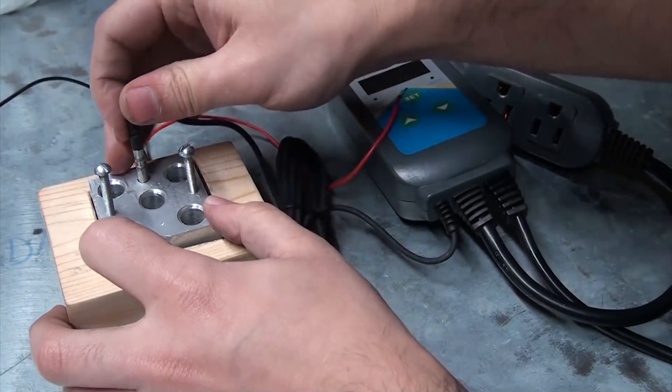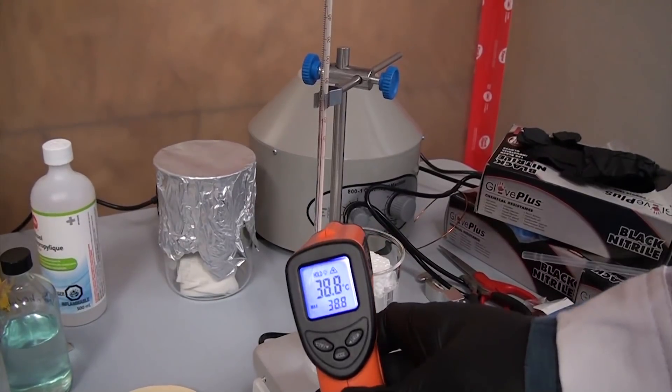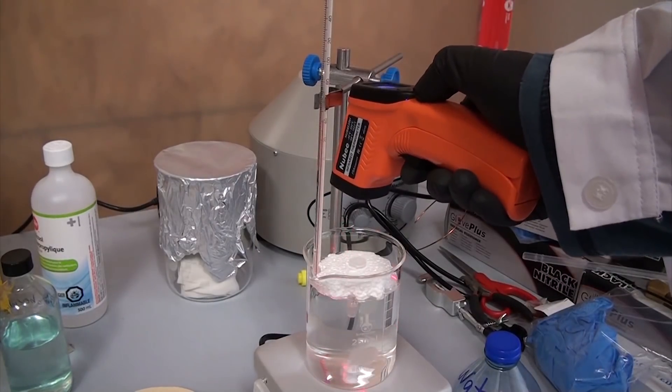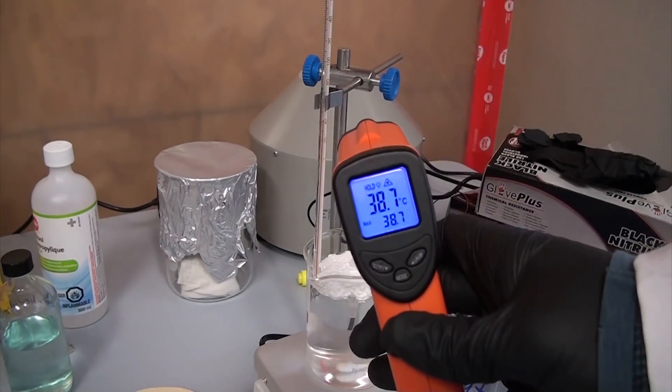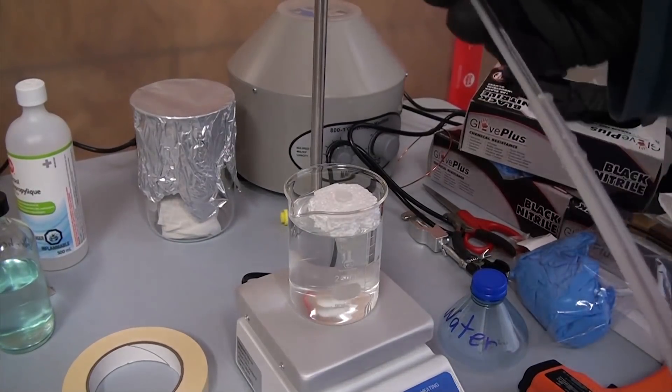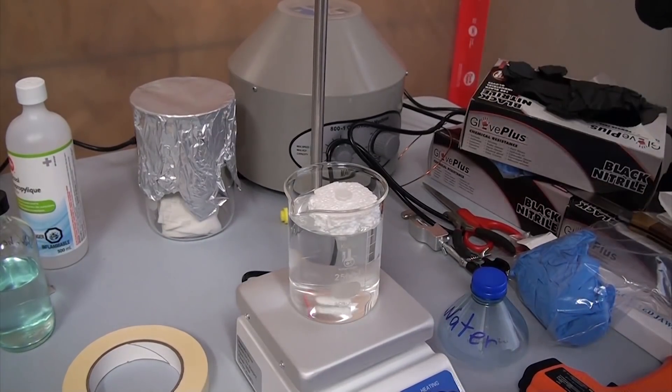Next up is a heat block, which will be used to replace the water bath we used in the yeast transformation video. While water bath like that is great for a quick way to heat reactions to specific temperatures, in most cases if you're using a hot plate you end up having to babysit them to make sure they stay at the right temperature.